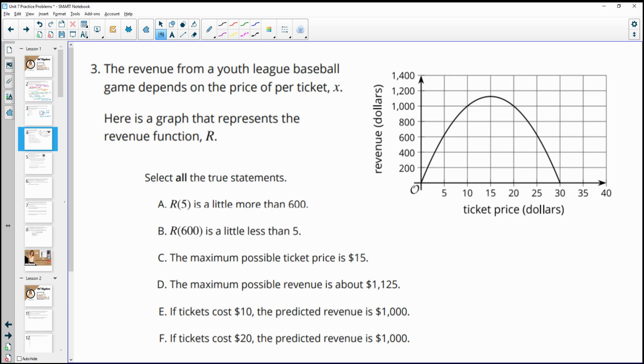Number three, the revenue from a youth league baseball game depends on the price of the ticket. Here is a graph that represents the revenue function. Select all true equations. So R of 5 is a little bit more than 600. So if we look here, here's 5, it's a little bit above the 600 mark for revenue, so that's true.